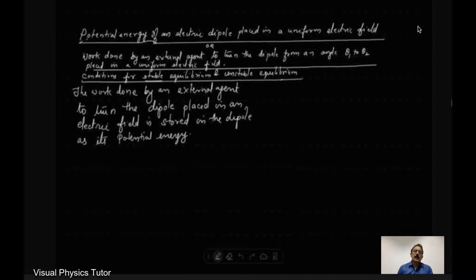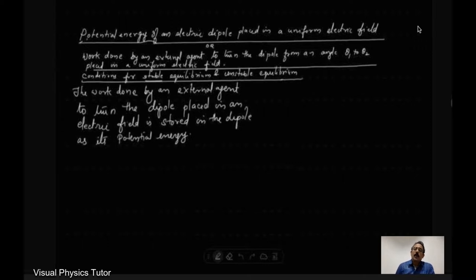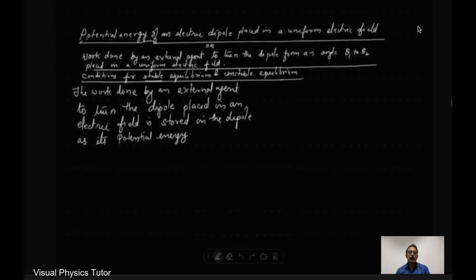Hello dear students, welcome to the channel Visual Physics Tutor — the best place to learn the concepts of physics in the most easiest and finest way. Today we will be dealing with a derivation related to potential energy of an electric dipole placed in a uniform electric field, or alternatively, work done by an external agent to turn the dipole from an angle theta 1 to theta 2. At last, we will learn the conditions for stable equilibrium and unstable equilibrium.